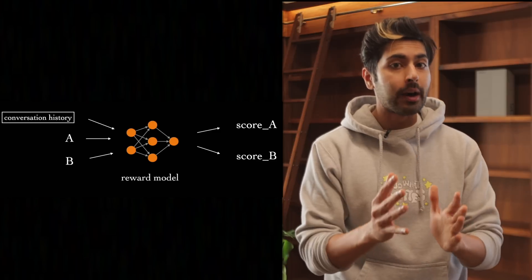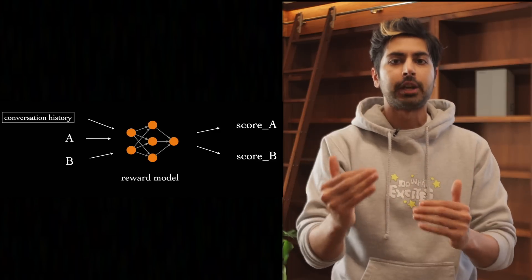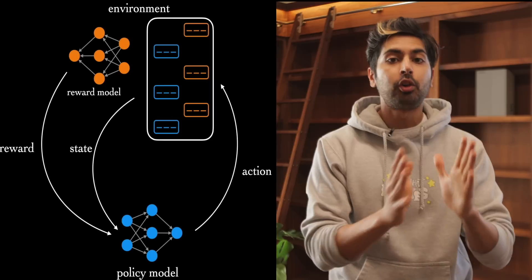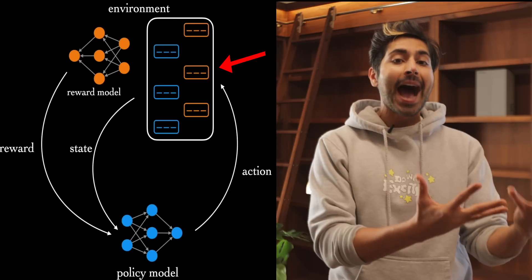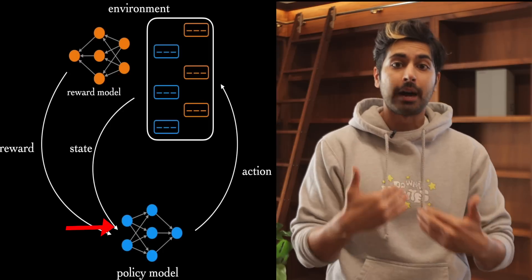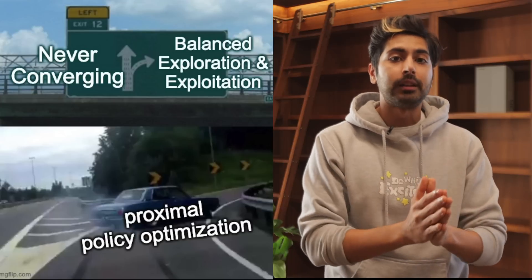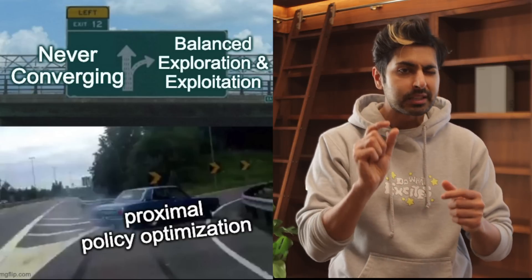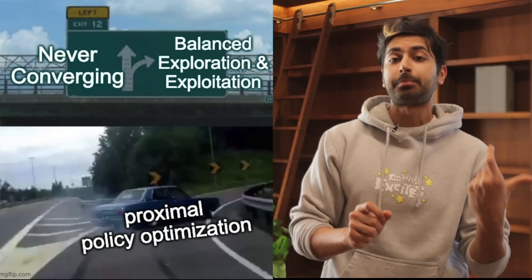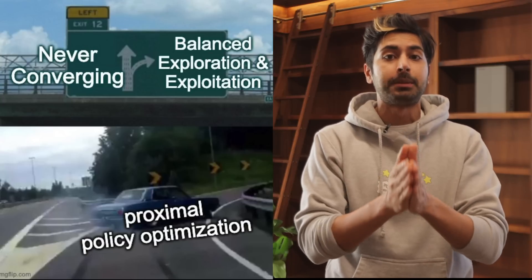Reinforcement learning, or RL, is used to fine-tune the model through a learned reward function based on human preferences. In this process, the model acts as an agent that makes decisions in an environment by performing actions, receiving rewards, and updating its policy. The algorithm they used was called Proximal Policy Optimization, or PPO, which updates the policy in small steps and balances exploration and exploitation to ensure the policy converges to the optimal solution.